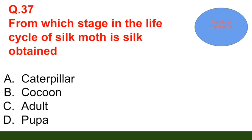Question number 37: From which stage in the life cycle of a silkworm is silk obtained? Option A: caterpillar; option B: cocoon; option C: adult; option D: pupa. The correct answer is option B — cocoon.